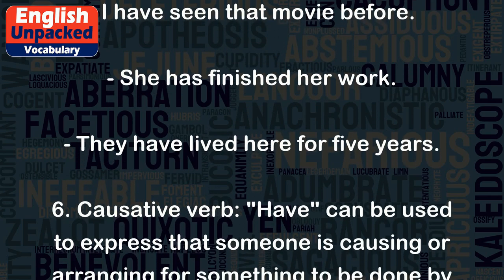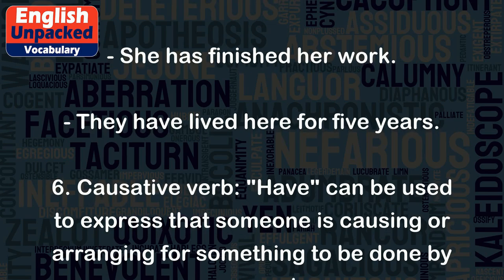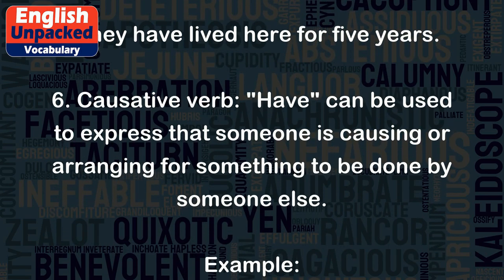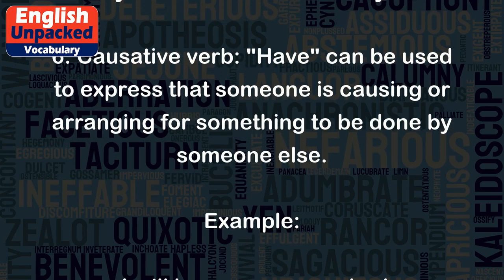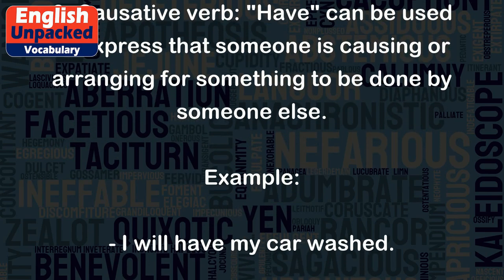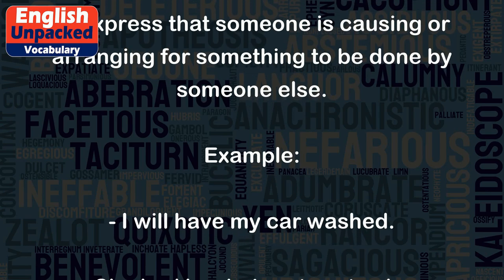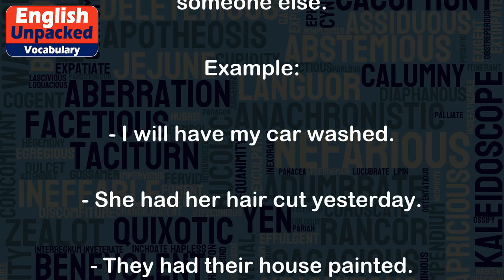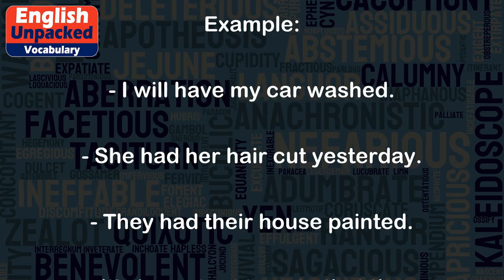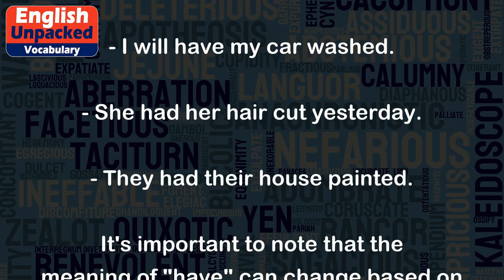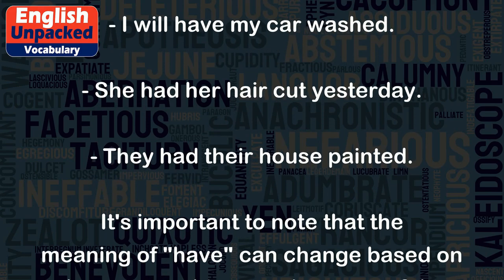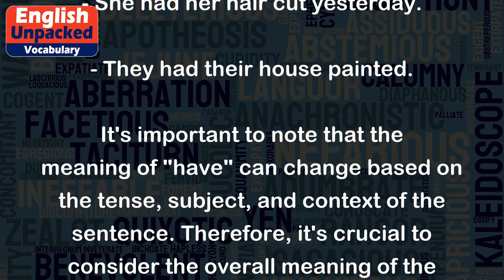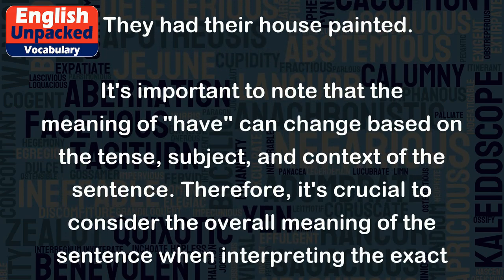6. CAUSATIVE VERB. HAVE can be used to express that someone is causing or arranging for something to be done by someone else. Example: I will have my car washed. She had her hair cut yesterday. They had their house painted. It's important to note that the meaning of HAVE can change based on the tense, subject, and context of the sentence.